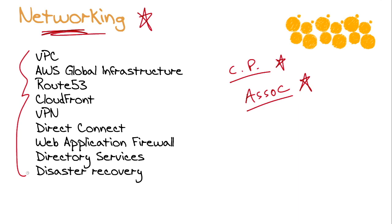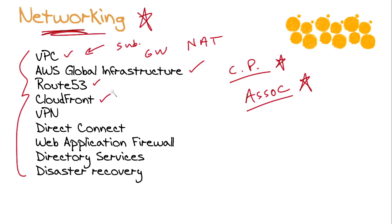There's so much to discuss here. We have the Virtual Private Cloud, and inside of it we're going to have subnets, gateways, internet gateways, egress-only gateways, NAT devices, and availability zones — so we need to talk about the global infrastructure. We also have Route 53 for DNS, CloudFront for serving content, VPNs, and direct connections. The list goes on, and some topics like VPC are going to have a whole bunch of components inside them. It is a broad, broad set of networking services that we'll be discussing in this critically important course.